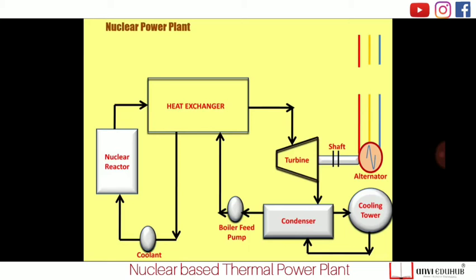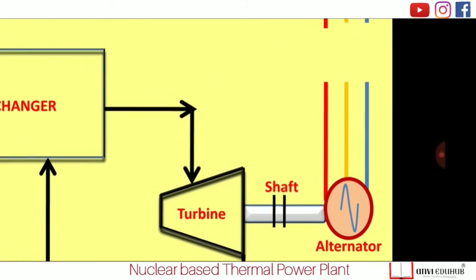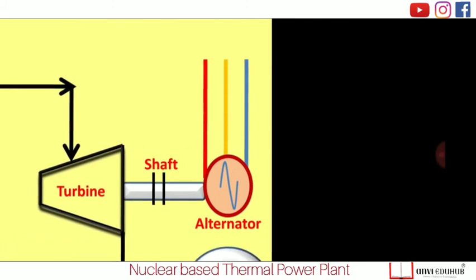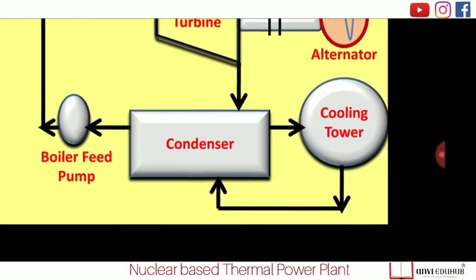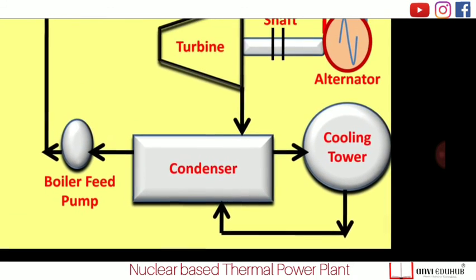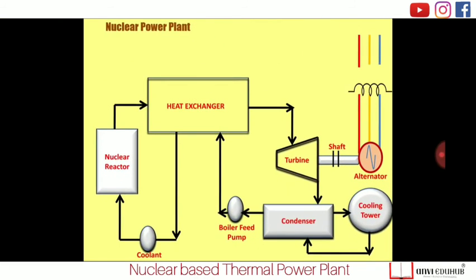This is the simple block diagram of a nuclear power plant: nuclear reactor → heat exchanger → steam turbine (mechanically coupled with alternator via shaft) → condenser. Steam from the condenser is converted back into water and fed again to the heat exchanger through a feed pump. There is also a cooling tower. This covers the basic concept and block diagram of nuclear power plants.